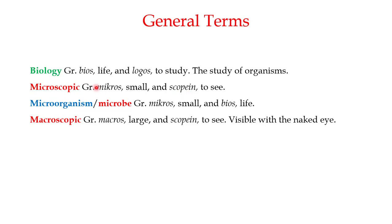Something that is too small to see is known as microscopic. Microorganisms, or microbes, come from 'micros' meaning small and 'bios' meaning life — they are small living organisms not visible to the naked eye. This is in contrast to macroscopic, where 'macro' means large, referring to things visible to the naked eye.